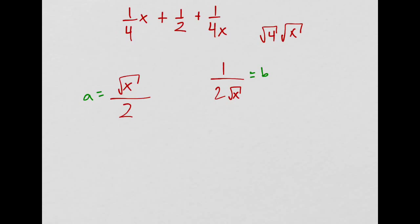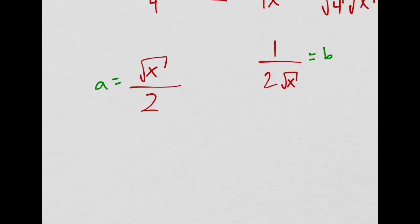So let's take a, which is square root of x over 2, times it by b, which is 1 over 2 square root of x, and then also multiply it by 2. So right now we're checking 2ab.